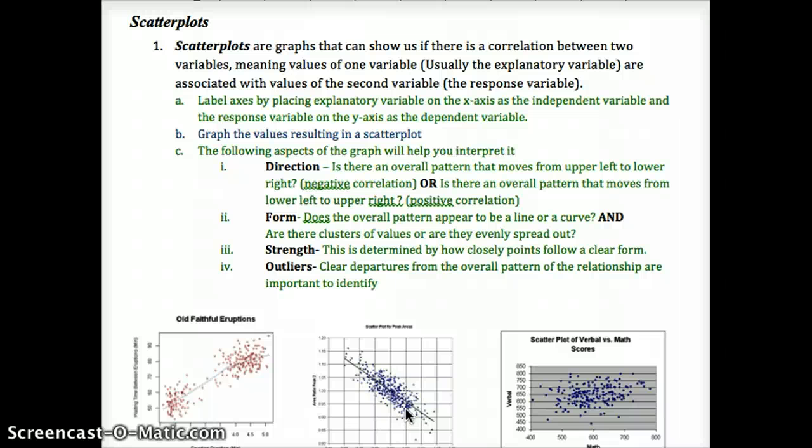The strength - how closely do the points follow that clear form? If they followed it perfectly, they'd be on the line. If it was weak, if there's no correlation, there would be just a scattering of points. As they get closer to the line, the strength gets stronger.